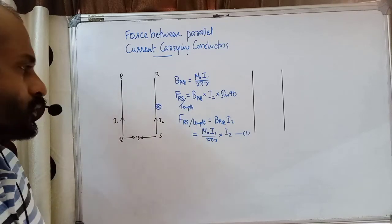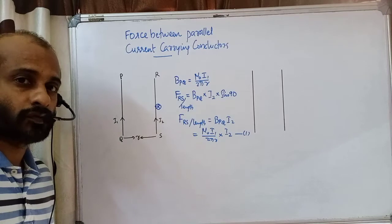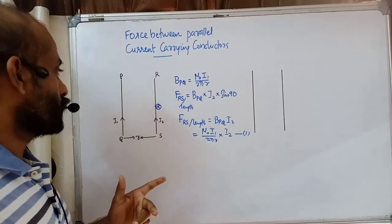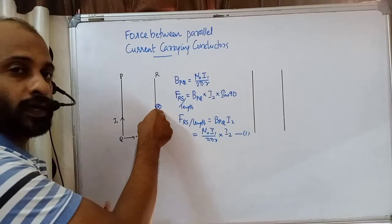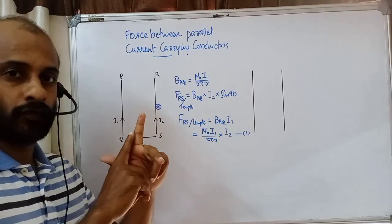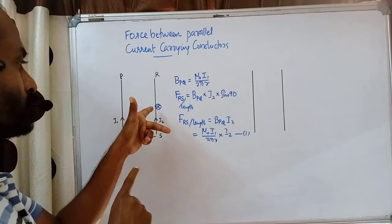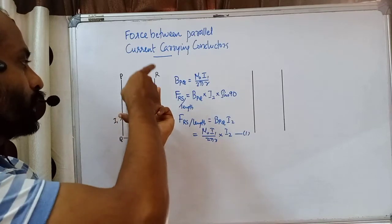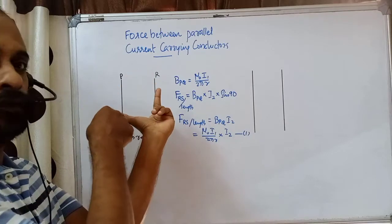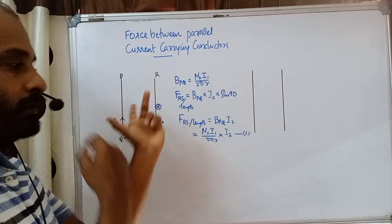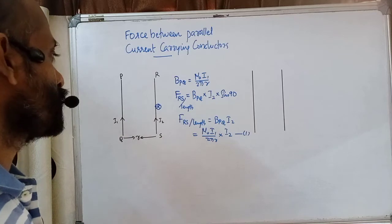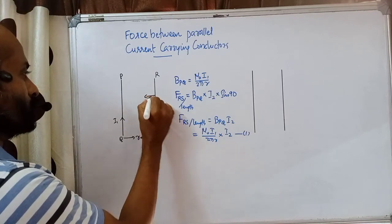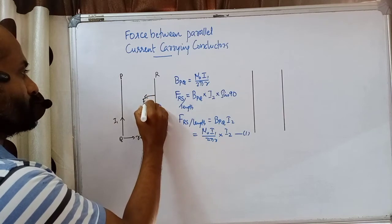Now we need to find the direction of this force using Fleming's left-hand rule. The magnetic field at the point on RS is inward, and the current in RS is upward. Pointing the forefinger inward for magnetic field and the middle finger upward for current, the thumb points towards the left side. So the force on RS, F_RS, is directed towards the left.